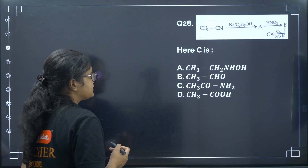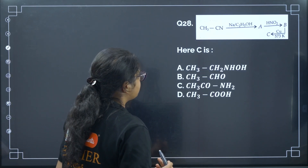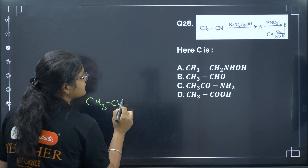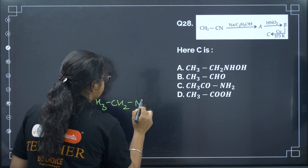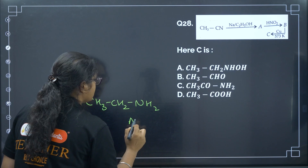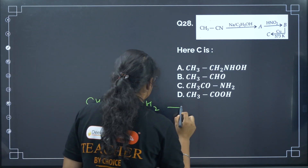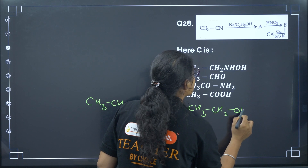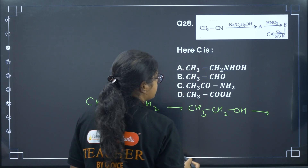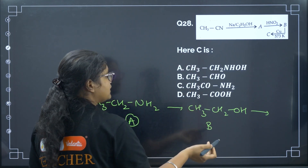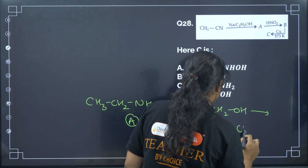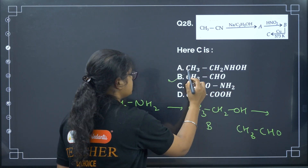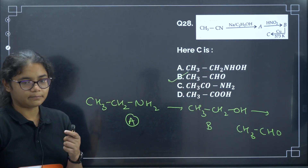Next: CH3CN treated with Na/C2H5OH first reduces to CH3CH2NH2 (compound A). Treating A with HNO2 gives an alcohol (compound B). Then treating with copper oxidizes it to CH3CHO. Correct answer: option B.